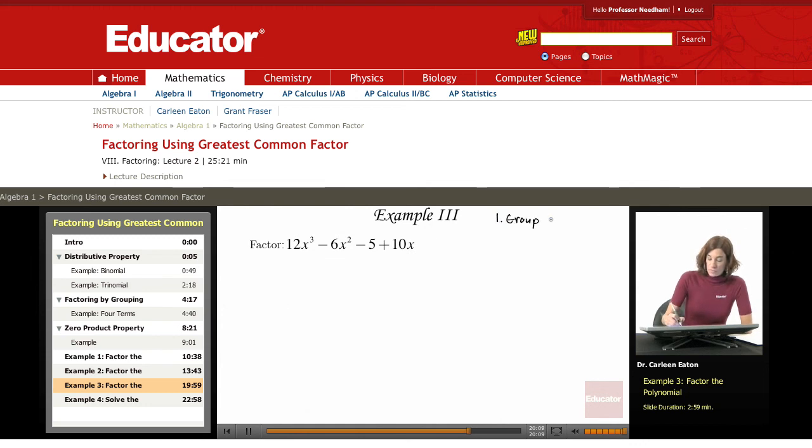so I'm going to use grouping. Group the terms. Group the first two and group the second two. 12x cubed minus 6x squared, and then I'm going to group negative 5 and 10x.